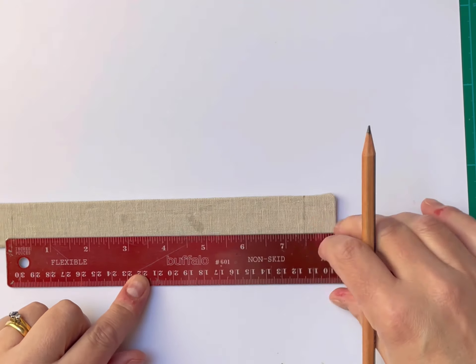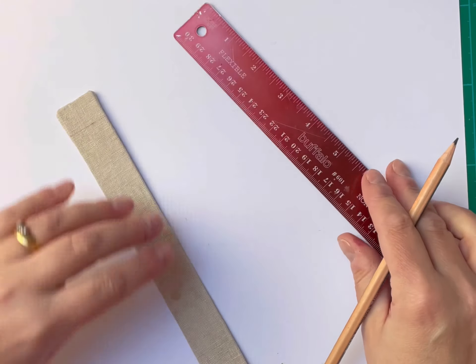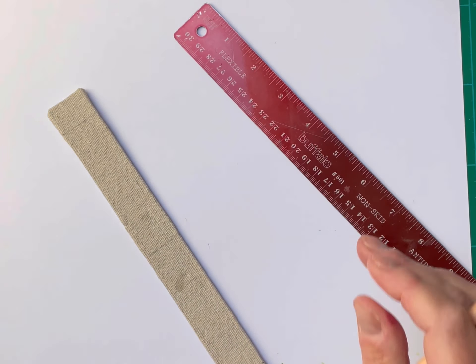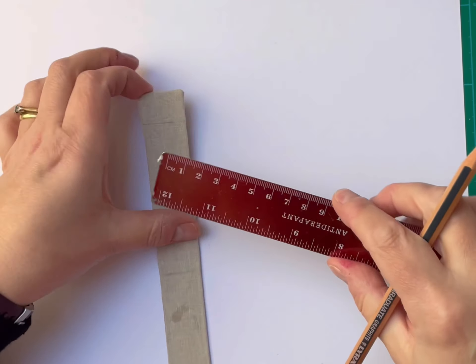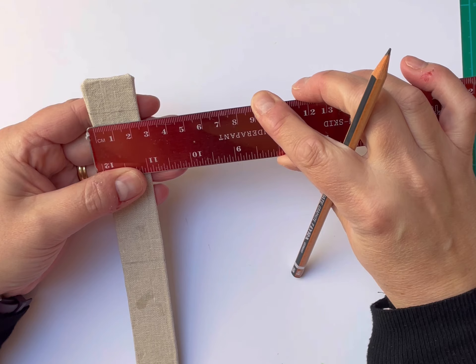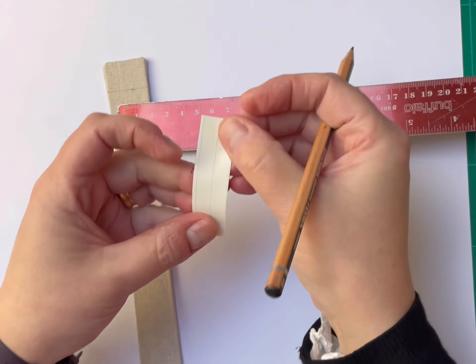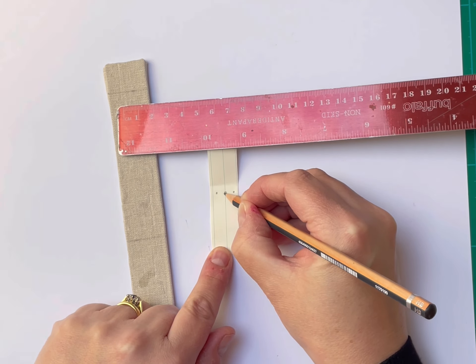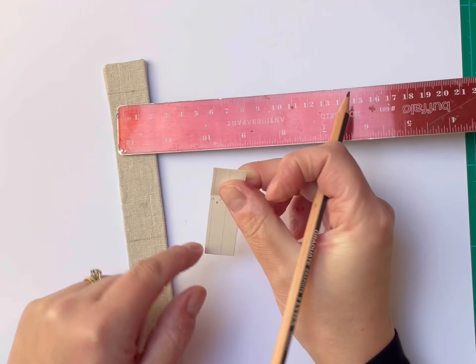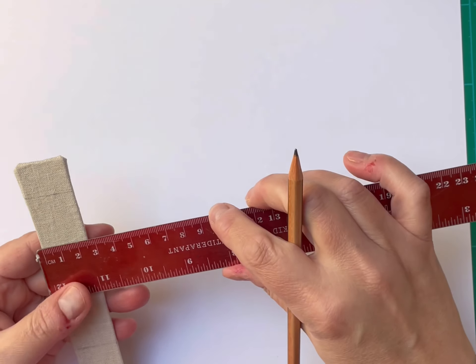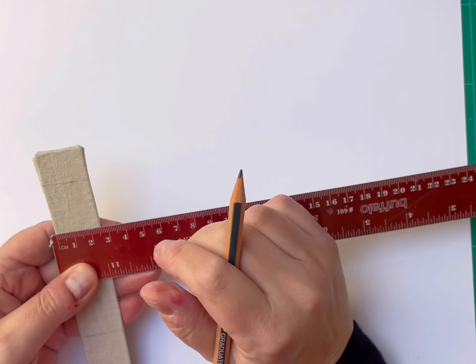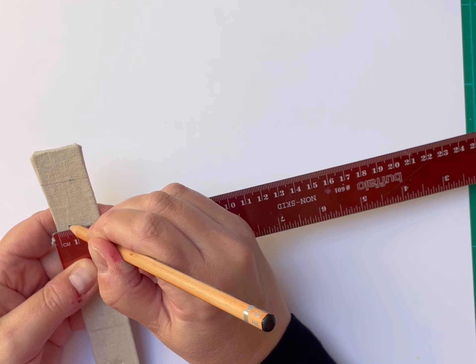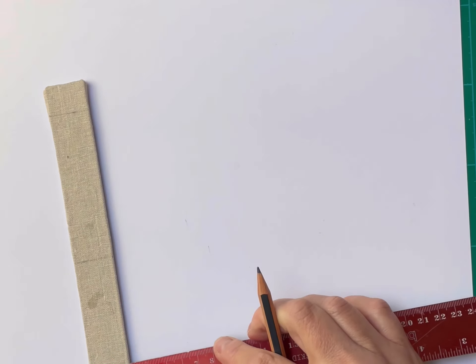Some people put it closer to the top and further from the bottom, but I don't think it really matters. So three and three quarters, seven and a half. I'm just going to do a line across there as well, and I'm going to rub these out. Two and a half centimeters across here. So we need four sections.